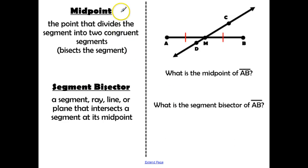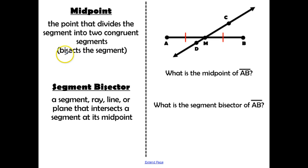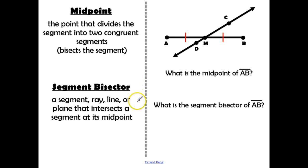Two important terms: midpoint — the point that divides a segment into two congruent segments, bisecting it into two equal parts. And segment bisector — a segment, ray, line, or plane that intersects a segment at its midpoint.